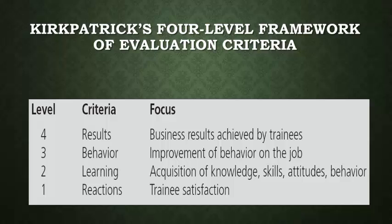The framework starts with reactions — basically the trainee's satisfaction: did they enjoy the session, what was their perception, how did they feel about it? From there you go to learning, which measures what the trainees have learned: did they acquire knowledge and skills, did their attitudes or behavior change? The third level is behavior — did this change the trainees' behavior, are they going to perform differently on the job because of this training? Number four is results: what was the return on investment, what were the costs and benefits, the business results achieved by the trainees — did sales increase, did the number of injuries reduce, what were the results from the business perspective?